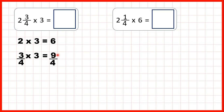But we can change 9 quarters to a mixed number. A fraction is really a division, so we can divide 9 by 4. That's 2 remainder 1, because 2 times 4 is 8, and then we need 1 more to get to 9. The remainder 1 is written as the numerator, and the denominator stays the same.